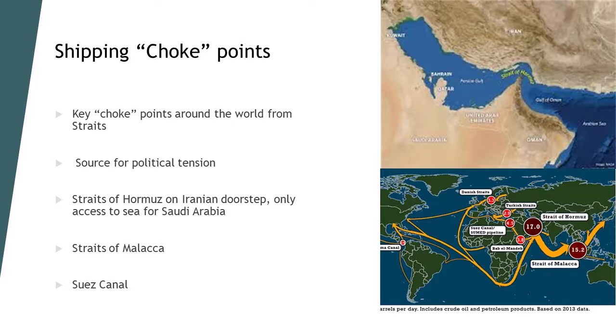Other significant choke points include the Straits of Malacca, which are the straits that lead to Singapore. It's a very narrow patch of water — so narrow that it's actually quite susceptible to piracy, where ships are cornered or boarded so cargo can be taken to sell on, or hostages taken. But also, if that strait were to be blocked off, access to Singapore becomes very difficult, and therefore the largest bunkering hub is ultimately blocked, which would cause shockwaves throughout the whole physical oil market.